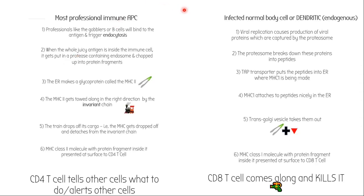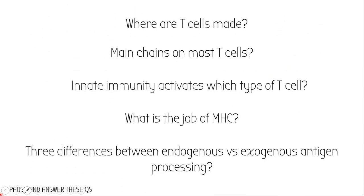This compares both ways to activate CD4 and CD8 cells. The endogenous route does not use MHC2 — it uses MHC1. The way to remember it: MHC1 times CD8 equals 8, and CD4 times MHC2 equals 8 — the rule of 8. So CD8 cells rely on MHC1, which relies on the TAP transporter. There's no invariant chain in the endogenous route, and no trans-Golgi vesicle in the antigen-presenting cell route.